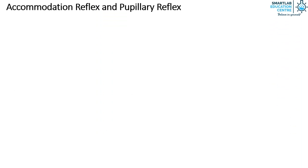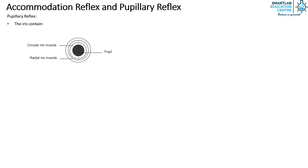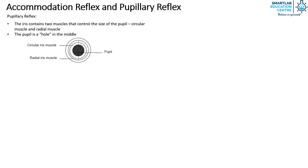Now we will look at the pupillary reflex. Recall that the iris contains two muscles that control the size of the pupil: the circular muscle and radial muscle. The pupil is a hole in the middle of the iris. The pupillary reflex occurs in two scenarios: in dim lighting and bright lighting.